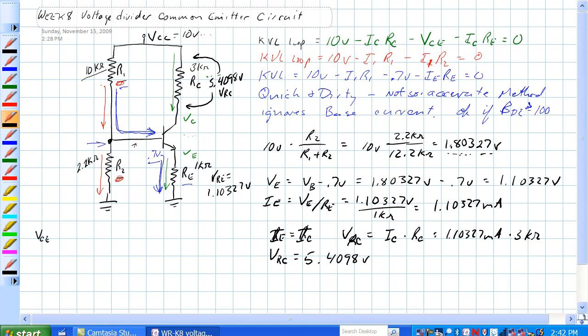So VCE is equal to voltage at the collector minus voltage at the emitter. VCE is equal to 10 volts minus the voltage drop across RC, which is 5.409 volts.